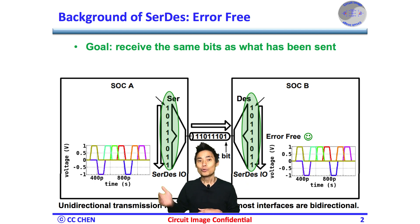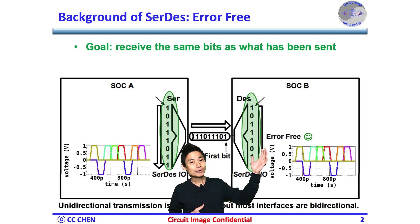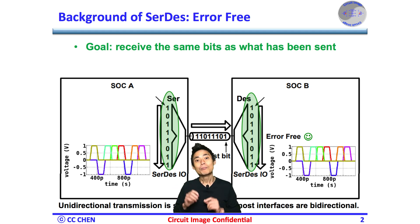For example, we send 1011101 and then we should receive 1011101 here. To be more straightforward, no error or very low BER during the digital communication is the goal.